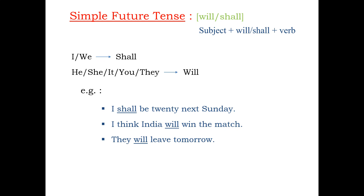So we see the usage of shall with I, will with India and will with they. India comes under other words — he, she, it, you or they — and with them we use will.